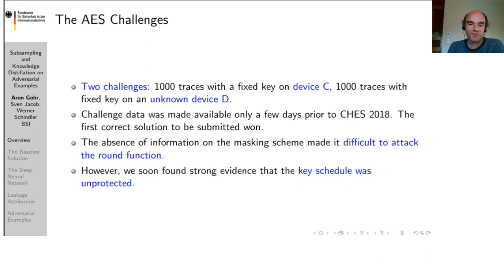In the challenge phase, two challenges were released. One was a 1,000 trace challenge with a fixed key on device C, which was already represented in the training data set. The other was a 1,000 trace challenge with a fixed key on an unknown device D, which is the harder part of the IIS challenge. The challenge data was made available just prior to CHESS 2018 and the first correct solution submitted won. Since we didn't know anything about the masking scheme, it was difficult to attack the round function. However, we soon found strong evidence that the key schedule was unprotected, so we went for the key schedule.